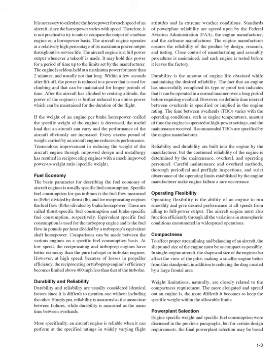Operating flexibility is the ability of an engine to run smoothly and give desired performance at all speeds from idling to full power output. The aircraft engine must also function efficiently through all variations in atmospheric conditions. To affect proper streamlining and balancing, the shape and size of the engine must be as compact as possible. In single-engine aircraft, the shape and size also affect pilot visibility, making a smaller engine better, in addition to reducing the drag created by a large frontal area. Weight limitations are closely related to the compactness requirement.